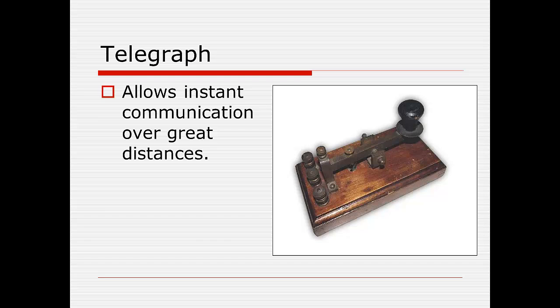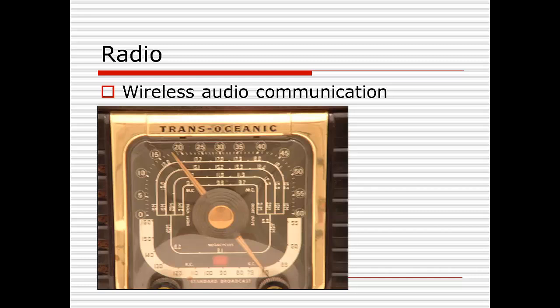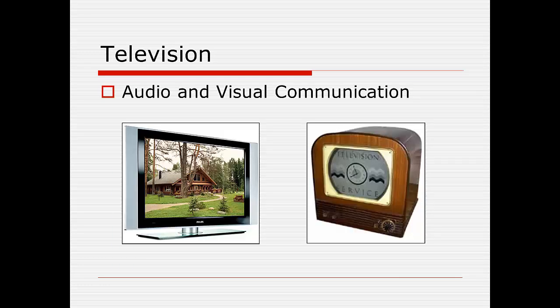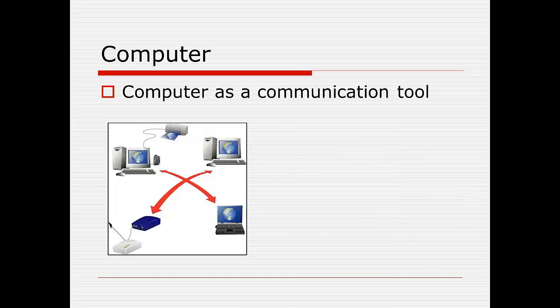The telegraph was the first time we could have instant communication. Eventually the wires were set up and we could communicate from one end of the country to the other instantly — people in California could get news of things happening on the East Coast the same day it happened, whereas before news had taken days if not weeks to travel. Then came wireless audio communication, known as radio. Then we have audio and visual communication through television. The most recent development is how we now use computers as a communication tool — computer sales really took off when people figured out how they could be used as a communication tool by using the internet.